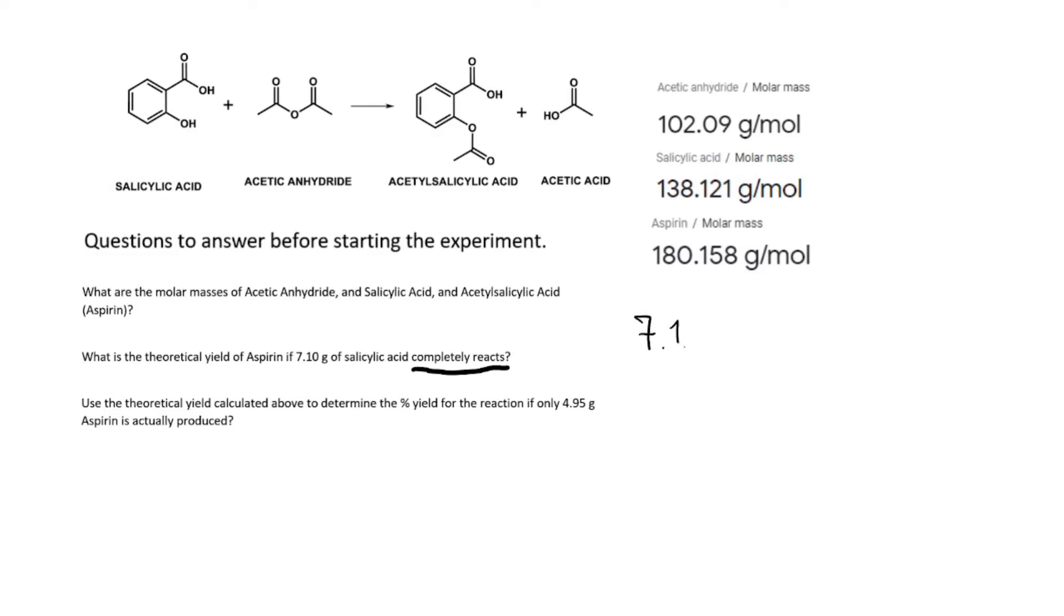We start with 7.10 grams of salicylic acid. We need to go from grams to moles of salicylic acid. For every 138.121 grams of salicylic acid, you get one mole of salicylic acid.